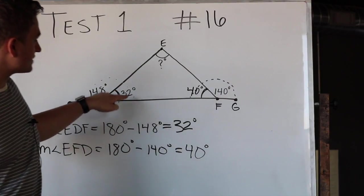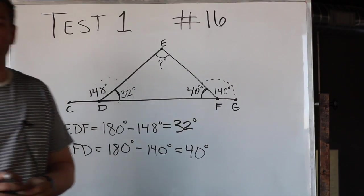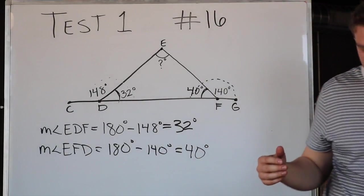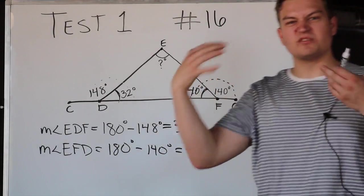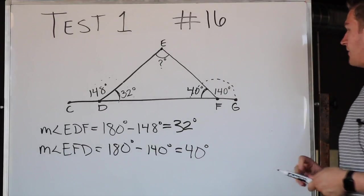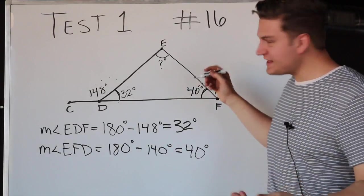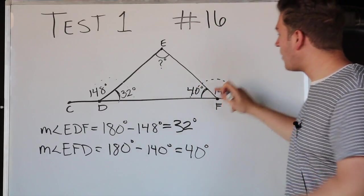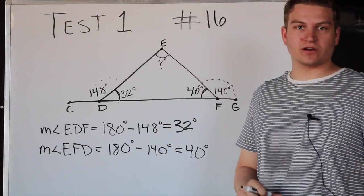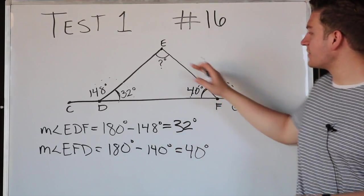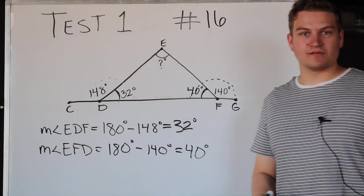So now we know the measures of two out of three of our angles inside this triangle. This is where that second piece comes into play, the interior angle sums of a triangle. What this means is, any triangle, if you add up all three angles inside that triangle, you will always get 180 degrees.